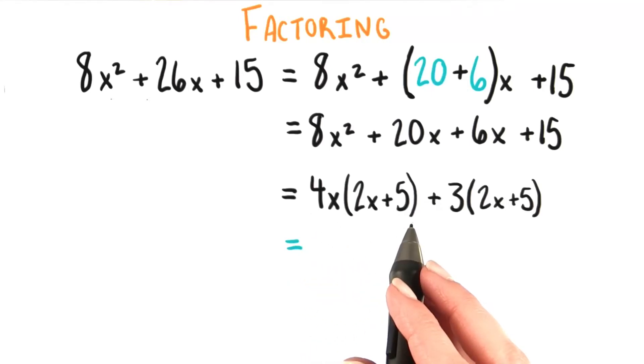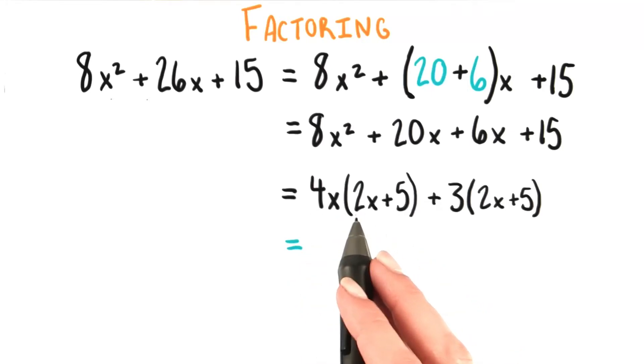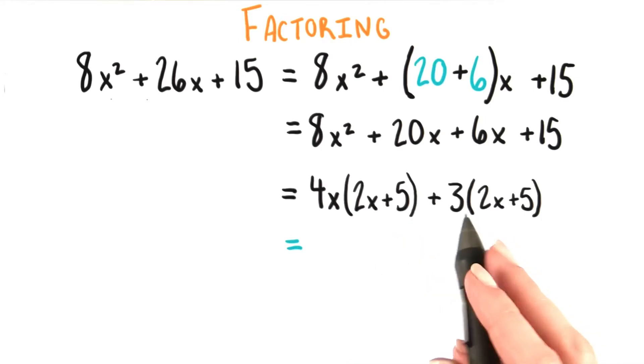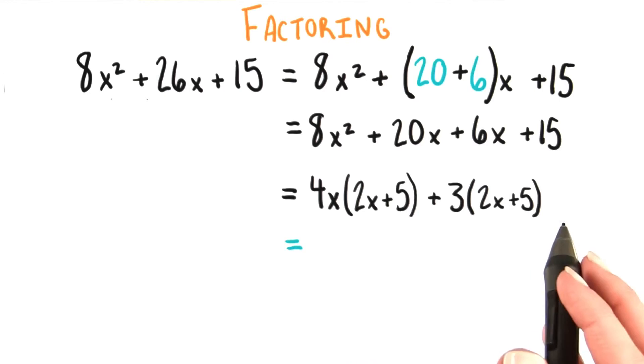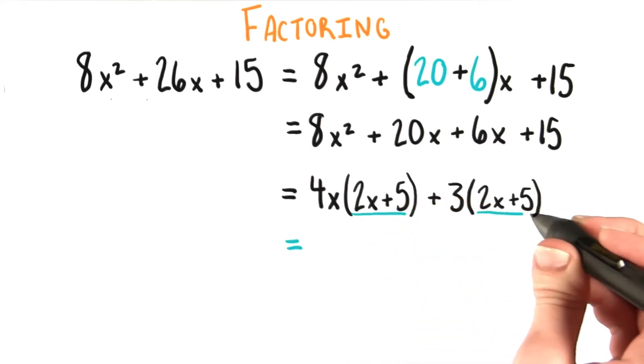We now have two things added together. We have 4x times the quantity 2x plus 5 added to 3 times the quantity 2x plus 5. Between these two terms, we have a common factor of 2x plus 5.